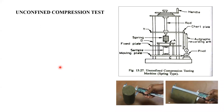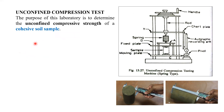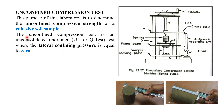Now we shall talk about the unconfined compression test. The purpose is to determine the unconfined compressive strength of a cohesive soil sample. This test is performed only for cohesive soil, not cohesionless soil. The unconfined compression test is also called a quick test, where the lateral confining pressure is equal to zero — that is, sigma 3 equals zero, so the pressure surrounding the sample will be zero.